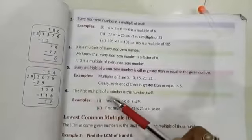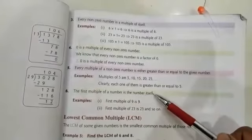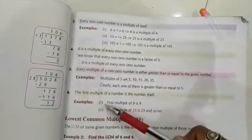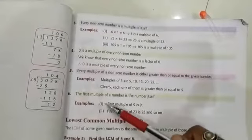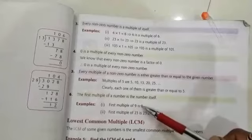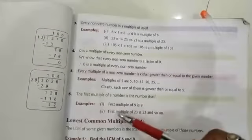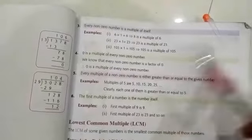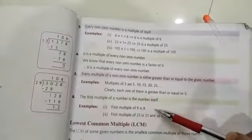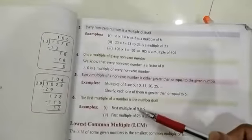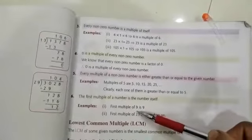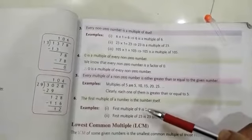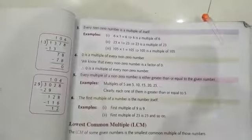Next, the first multiple of a number is a number itself. Suppose, first multiple of 9 is 9, first multiple of 23 is 23 and so on. Whatever number's multiple we have to find, the first multiple of that number will be itself.